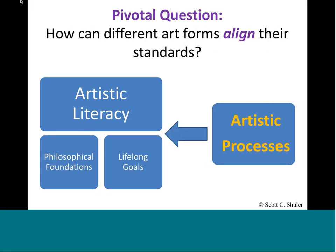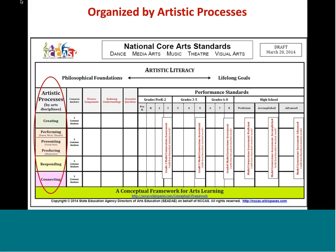Now, what else did we use to align the standards? We agreed to use the artistic processes as an organizer. We had used those in the 1997 NAEP National Assessment in the Arts, and a lot of states had adopted it. These are the artistic processes: creating, responding, and connecting are common among all the arts. The only difference is what we jokingly refer to as the 'P verb' — performing for dance, music, and theater; presenting in visual arts; and producing in media arts.